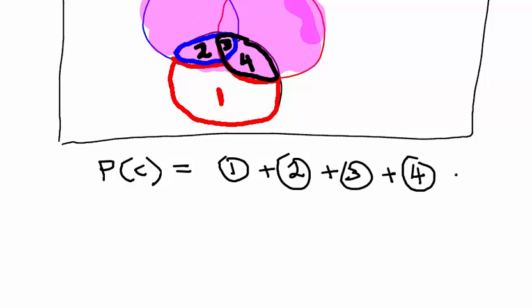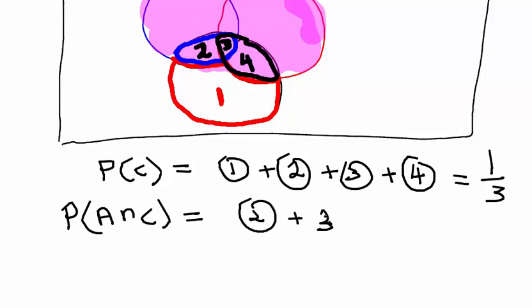So the probability of C is the area that corresponds to area 1, plus the area that corresponds to 2, plus the area that corresponds to 3, plus the area that corresponds to 4. And that is equal to 1 third. That we know. Now, probability of A intersection C is 2, plus 3, and that is equal to 1 sixth.